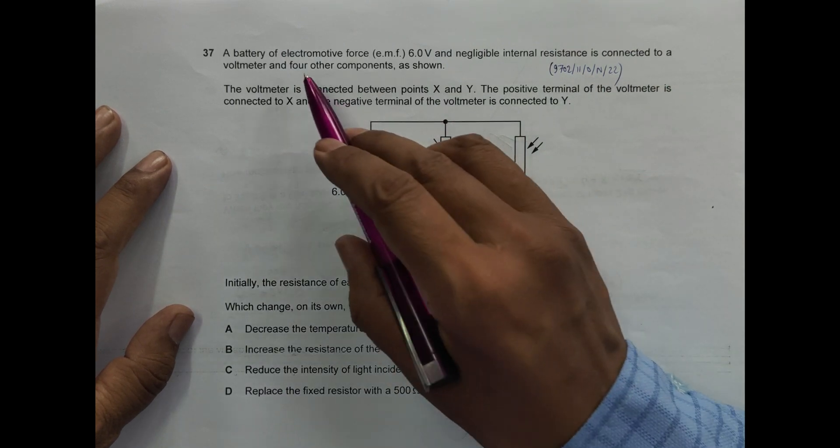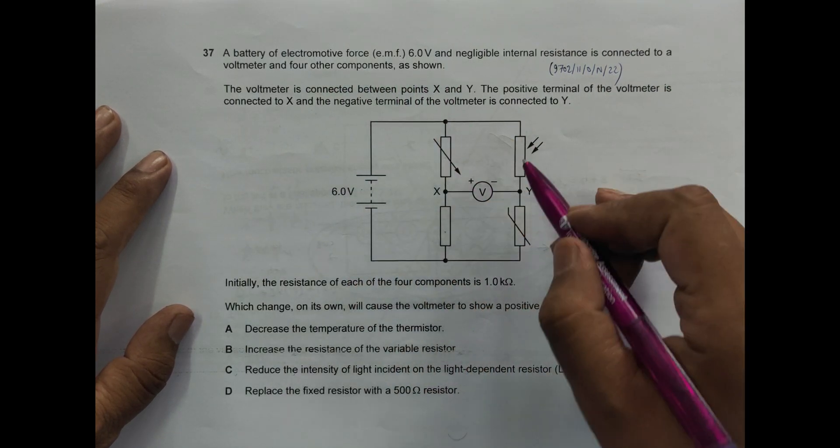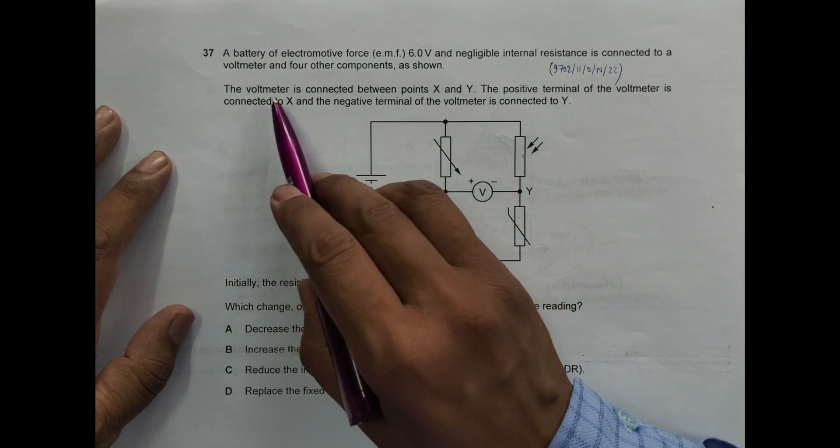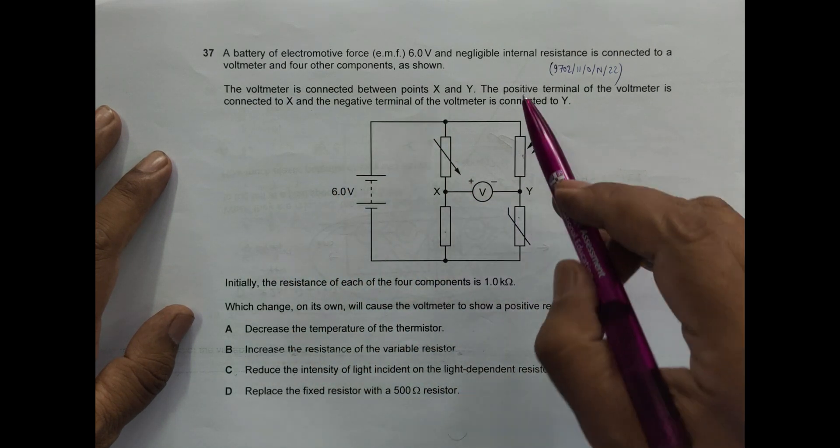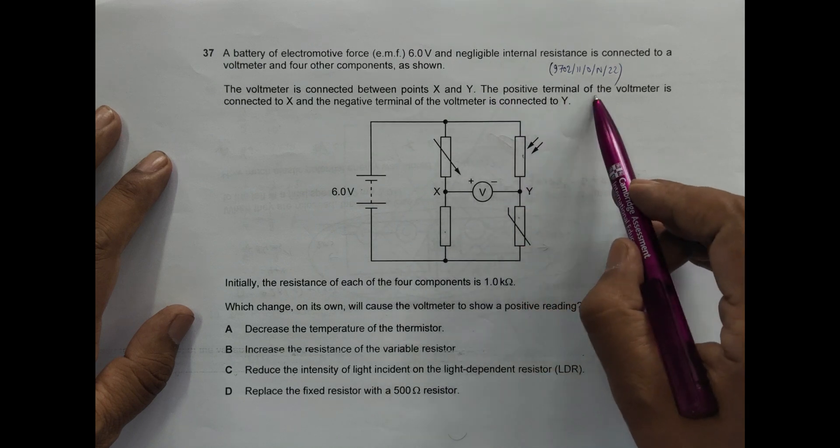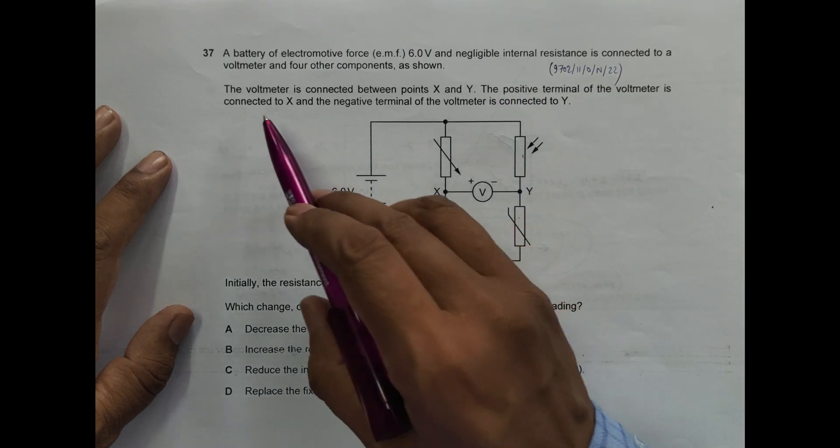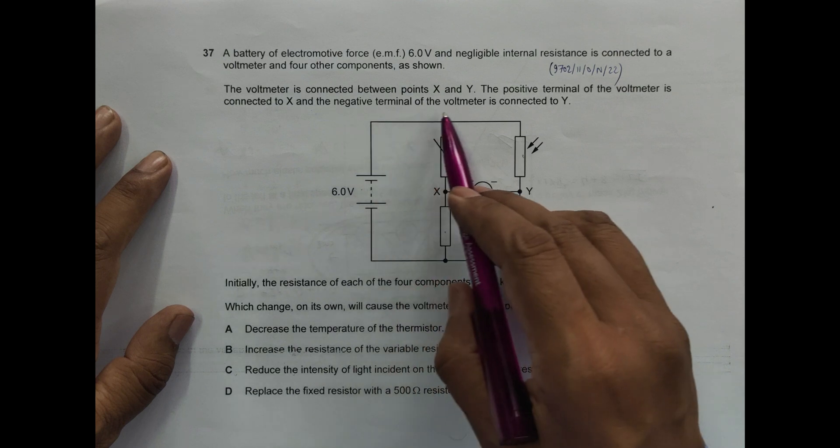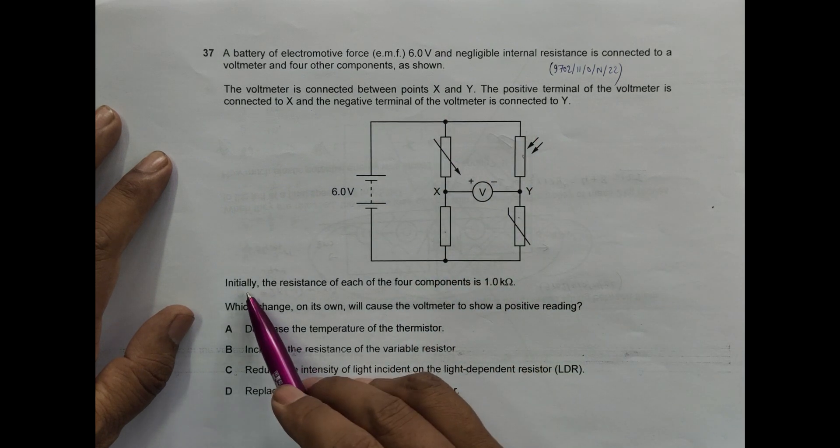Four components here. The voltmeter is connected between points X and Y. The positive terminal of the voltmeter is connected to X and the negative terminal of the voltmeter is connected to Y. Initially, the resistance of each of the four components is 1.0 kilo-ohm.